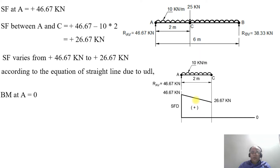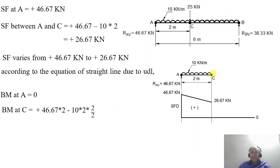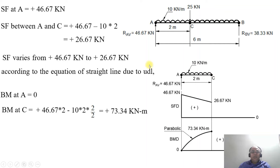The bending moment at A equals zero. The bending moment at point C tends to sag, so it is positive: BM_C = (46.67 × 2) − (10 × 2 × 2/2) = +73.34 kN·m. Since it involves W × X × X/2, the power of X is 2, giving a parabolic curve from 0 to 73.34 kN·m between A and C.